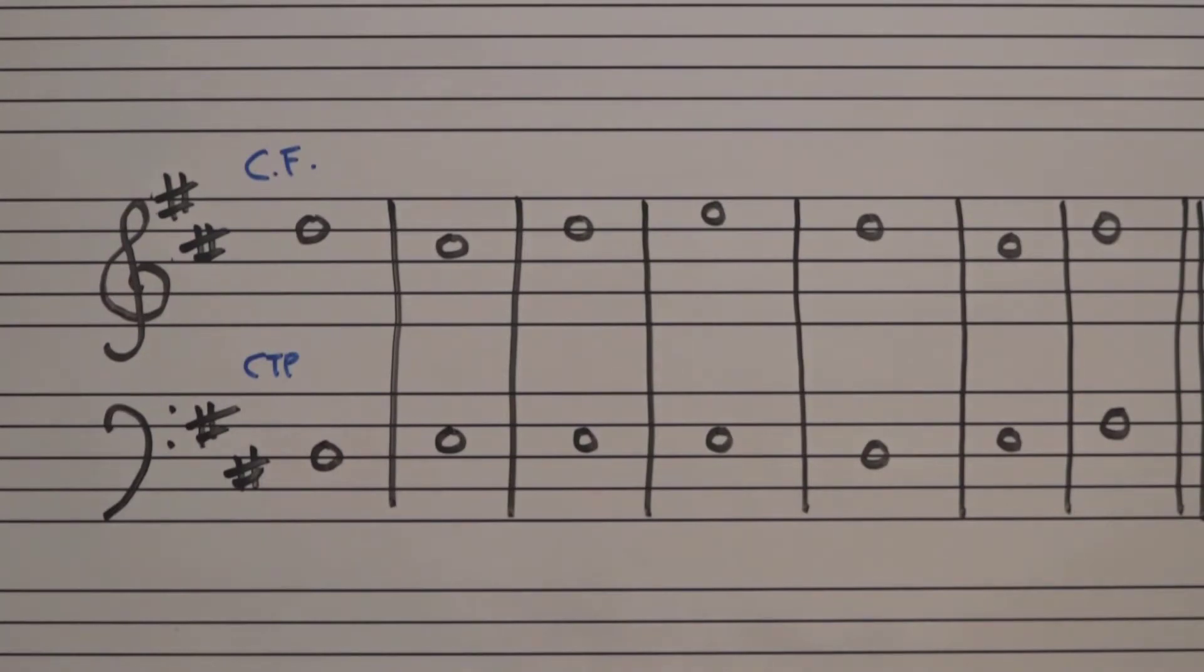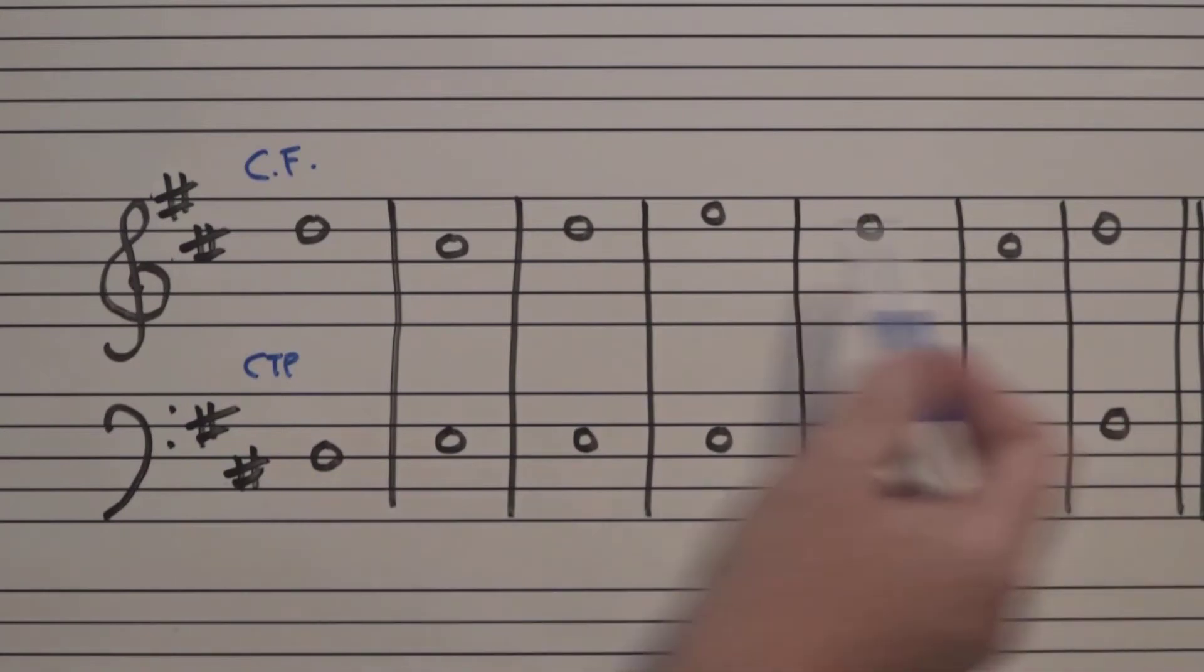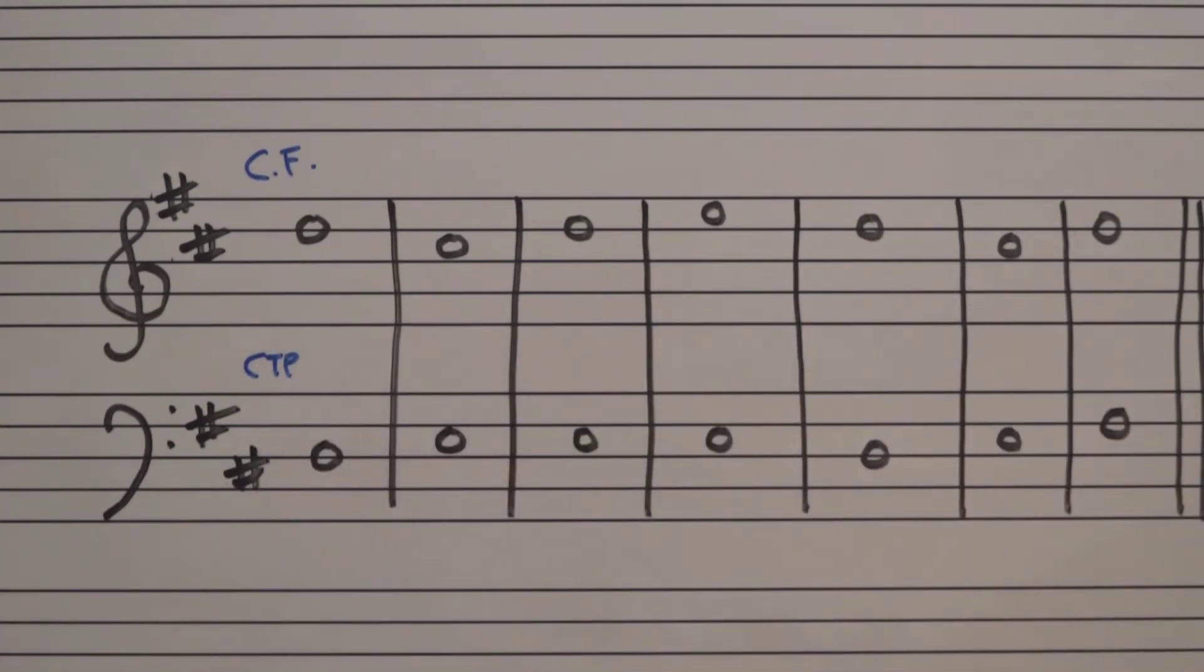There are rules that we should follow when writing a counterpoint line against a Cantus firmus. And really those rules can be found by finding the interval between the two notes. That's what all those spaces are below each note.